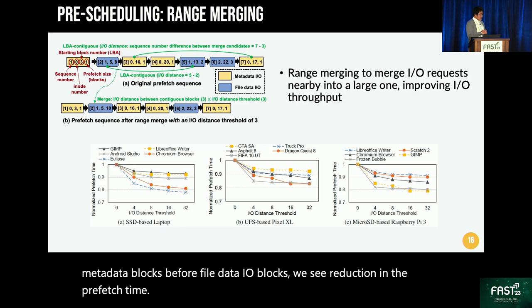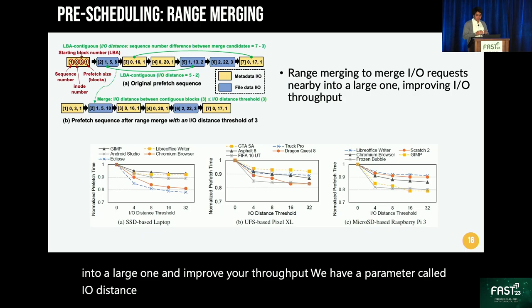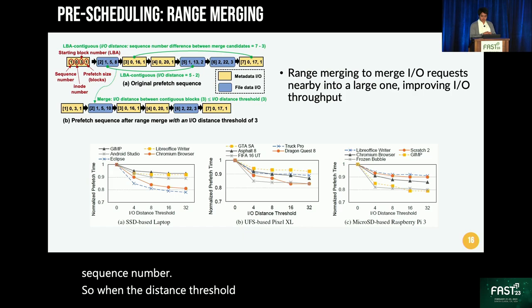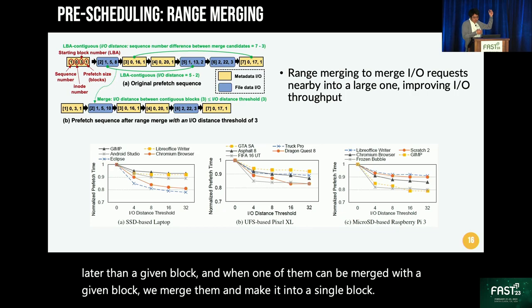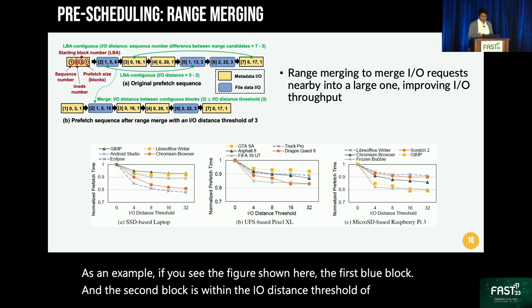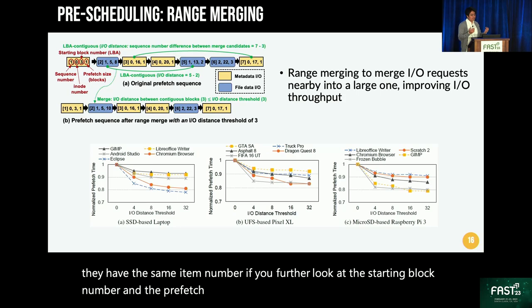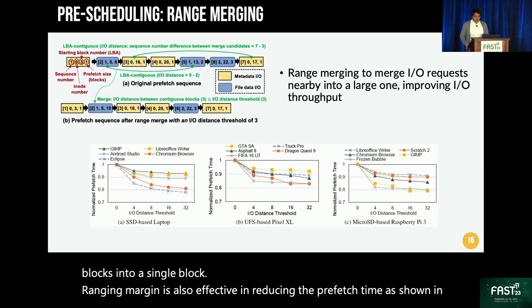As a second technique, we use range merging to merge IO requests that are nearby into a larger one and improve IO throughput. We have a parameter called IO distance threshold to determine the nearness of blocks in terms of sequence number. When the distance threshold is three, we look at the three blocks that appear later than a given block, and when one of them can be merged with the given block, we merge them into a single block. As shown in the figure, the first blue block and the second block are within the IO distance threshold of three and share the same inode number — looking at the starting block number and prefetch size, we can merge them into a single block. Range merging is effective in reducing prefetch time; as we consider more candidate blocks by increasing the threshold, there is a higher chance to merge different blocks.